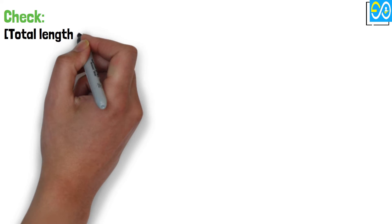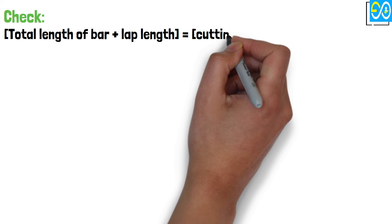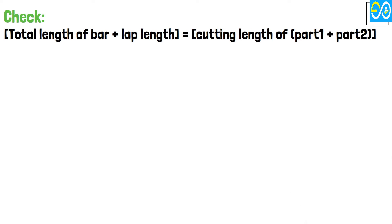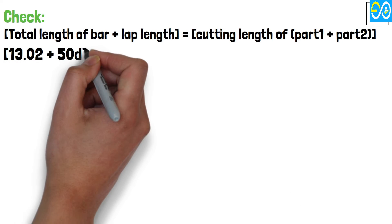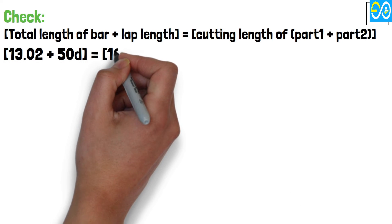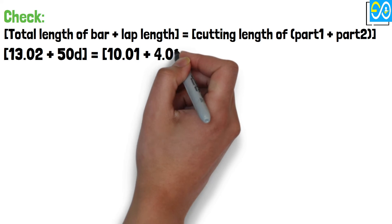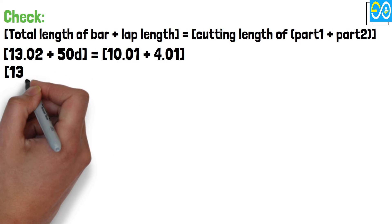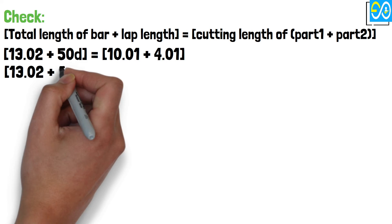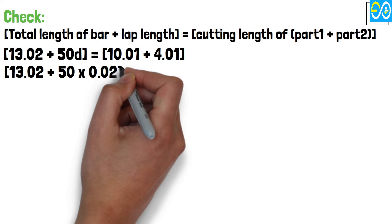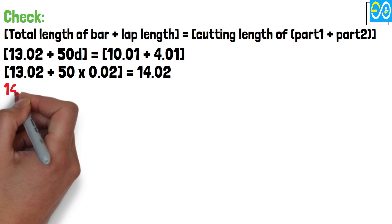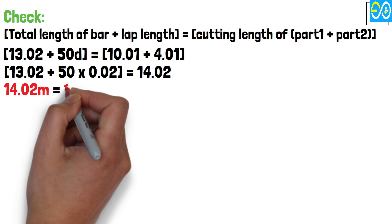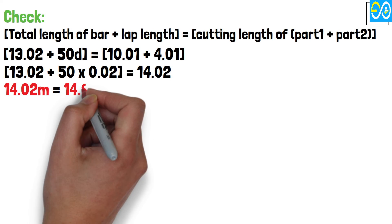Check: Total length of bar plus lap length equals cutting length of Part 1 plus Part 2. 13.02 plus 50 times 0.02 equals 10.01 plus 4.01. 13.02 plus 1.00 equals 14.02. 14.02 meters equals 14.02 meters. Verified.